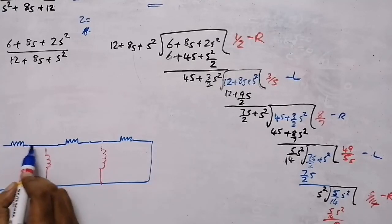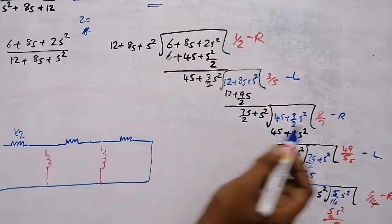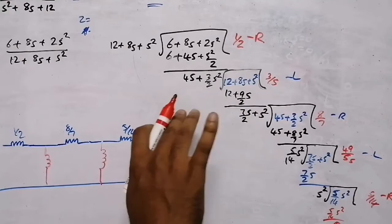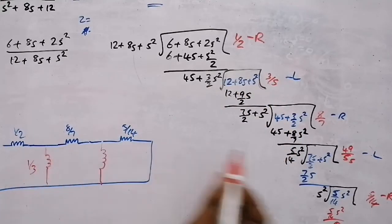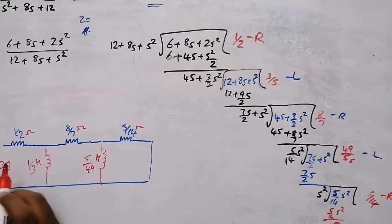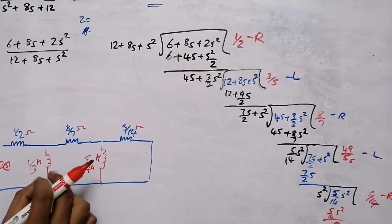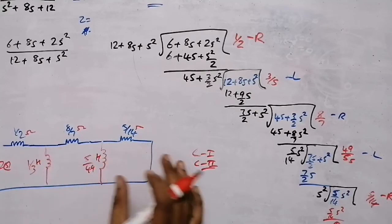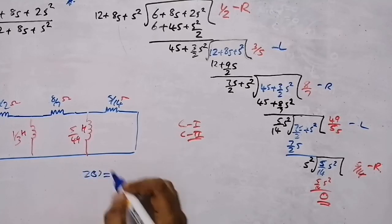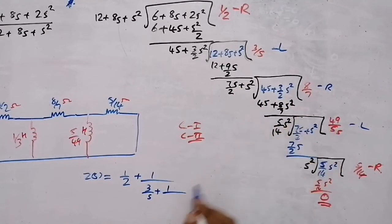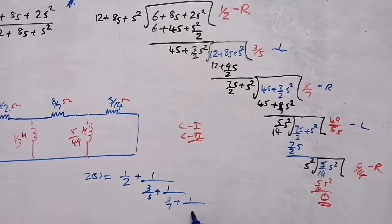For Cauer 2 element values: series elements are written directly — R₁ = 1/2 Ω, R₂ = 8/7 Ω, R₃ = 5/14 Ω. For shunt inductor elements, take the reciprocal of the quotient terms: L₁ = reciprocal of 3/s → 1/3 H, L₂ = reciprocal of 49s/5 → 5/49 H. The continued fraction form is: Z(s) = 1/2 + 1/(3/s + 1/(8/7 + 1/(49s/5 + 1/(5/14)))).